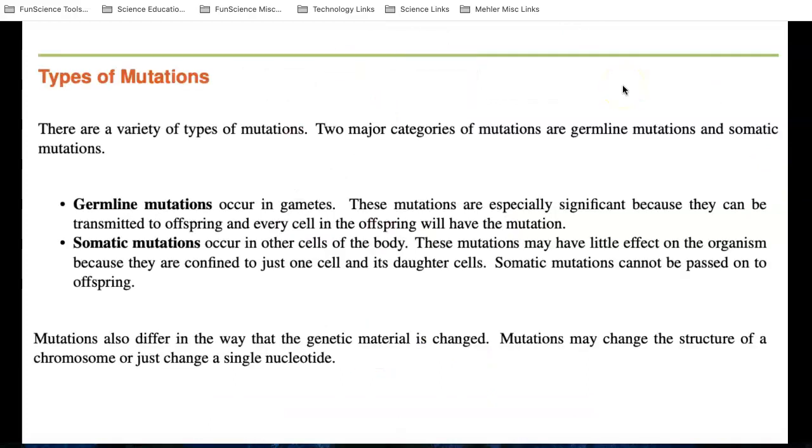There are two major categories of mutation. One is called the germline mutation and one is called the somatic mutation. Germline mutations can occur in gametes. Remember what gametes were? Those are our sex cells, the egg if you're female, the sperm if you're male. And if you cause genetic damage here, that could have significance for your offspring.